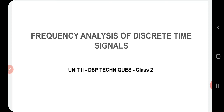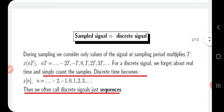This first slide is just a repetition of what we have already seen in the last class. During sampling we consider only values of the signal at sampling period multiples T, that is x(nT), where n is minus T, T, minus T, 0, 3, etc. For a discrete signal we simply count the samples, so discrete time becomes x(n), where x(n) is the nth number in the discrete sequence and n is an integer ranging from minus 2, minus 1, 0, 1, 2, 3, and so on.